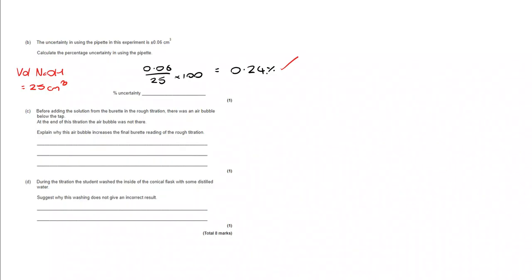Moving on to C, before adding the solution from the burette in the rough titration, there was an air bubble below the tap. At the end of the titration, that bubble was no longer there. Why would the air bubble increase the final burette reading of the rough titration? Well, what we're looking for here is that the air bubble is taking up space where liquid should have been.